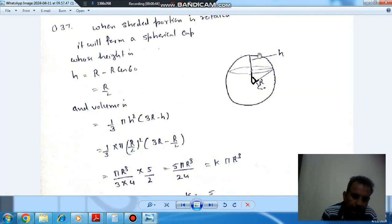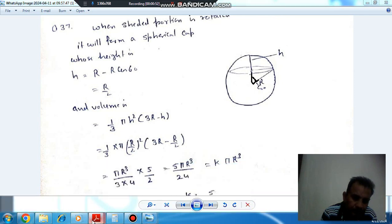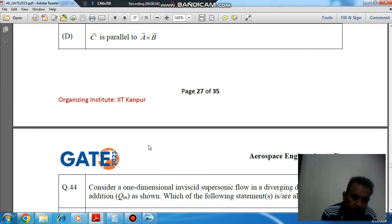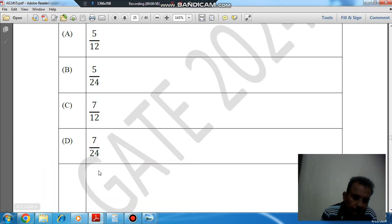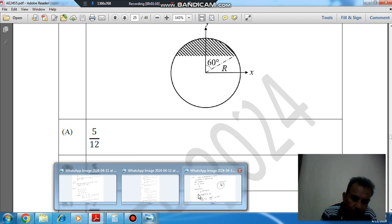So here, suppose this is your sphere—sorry, this is your circle and this is the shaded portion. Then this is rotated about this y-axis. It will form a sphere, or the shaded portion will form a spherical cap.